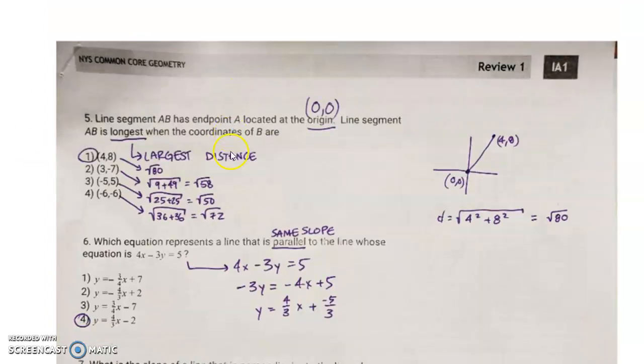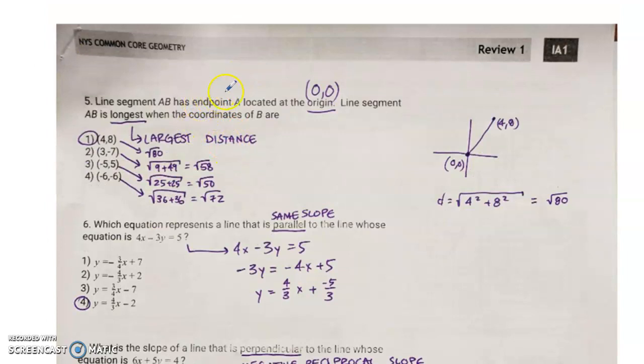Moving on to question number 5, it tells you that segment AB has endpoint A at the origin, the origin is 0 comma 0, then line segment AB is longest when the coordinates of b are, well, longest means largest distance, which means I'm going to use the distance formula four times. It turns out that the longest line is 4 comma 8, which is radical 80.